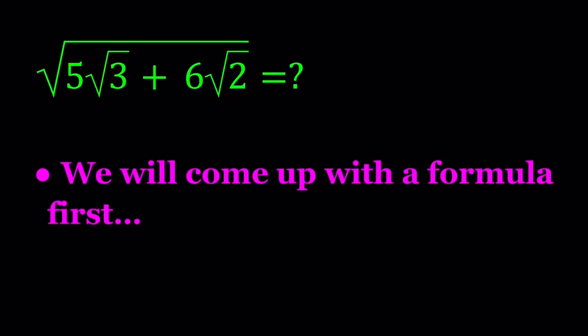In this video, we're going to be simplifying a radical expression. In other words, we're going to denest this radical expression. You've probably seen nested radicals before, and we're going to write this as a sum of two or more radicals. But before we start simplifying, we're going to come up with a formula first, and then we'll see how we can apply it to different situations.